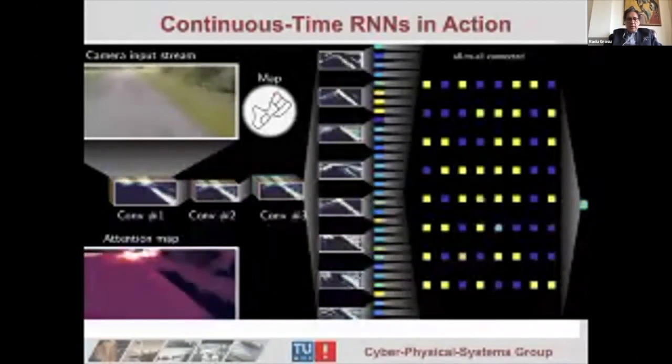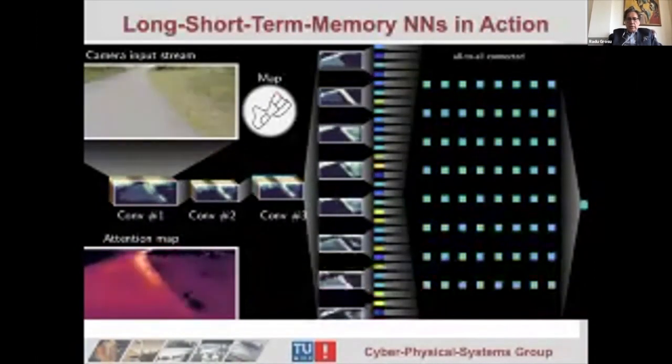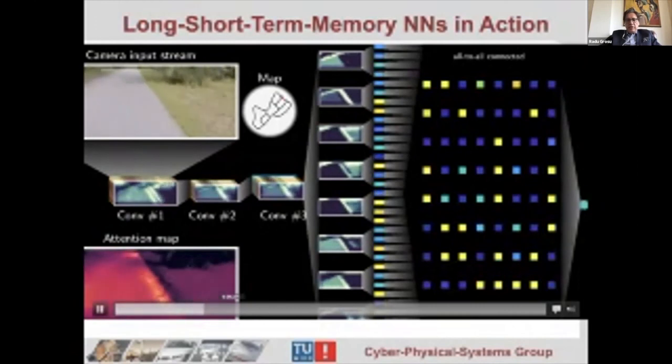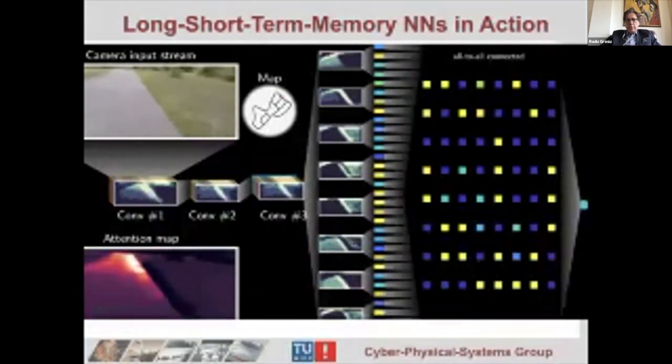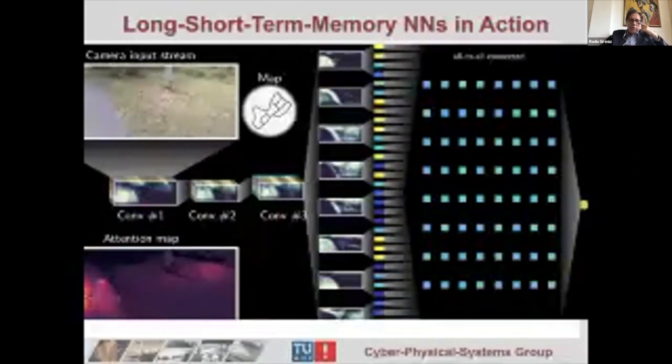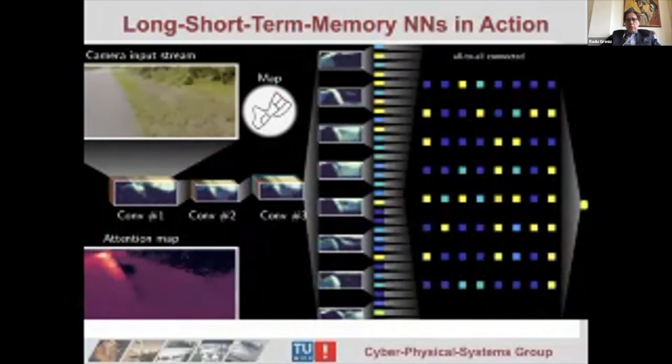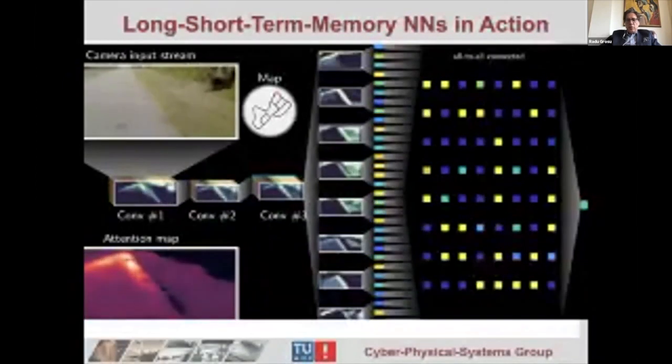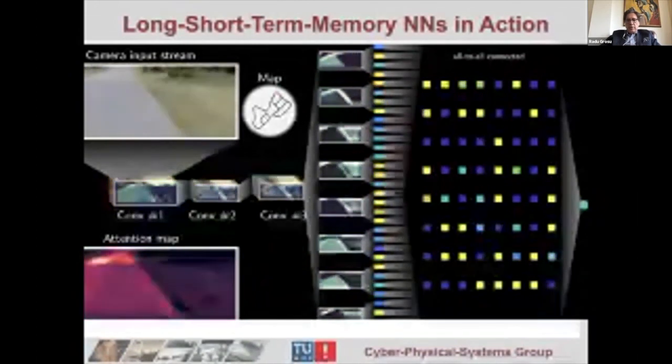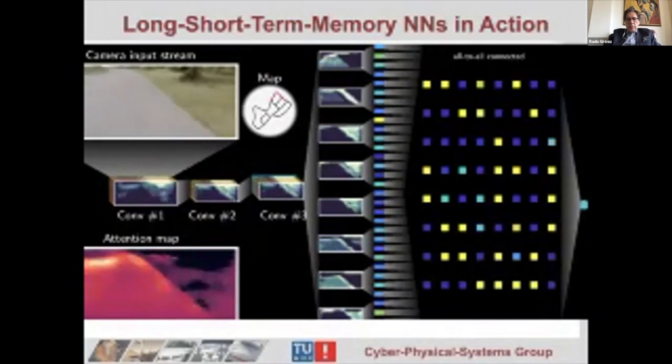The most popular recurrent neural networks are the LSTMs, developed by the way in Austria by Hochreiter. Here we have 64 of them. They perform somewhat better. Now you are going to see what happens on the steep curve—they also get out of the street because they look too much everywhere, so it's not so clear. It's more difficult to distinguish the road from outside the road. You can see it focuses on the outside, focuses mostly on the road itself, but it also looks a lot to what's happening left and right on the outside of the road.